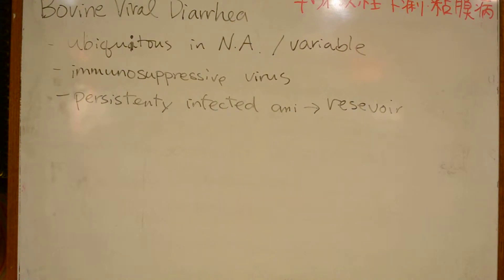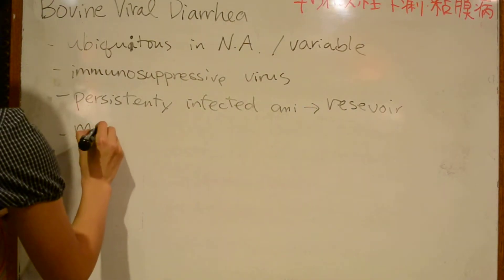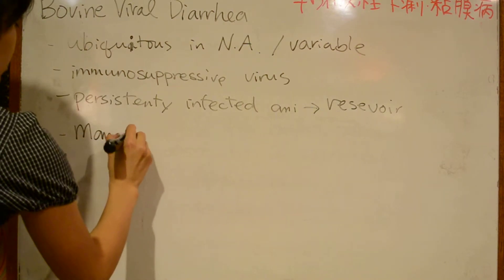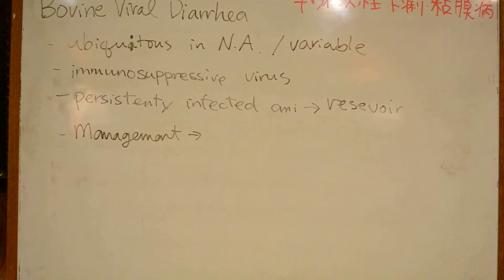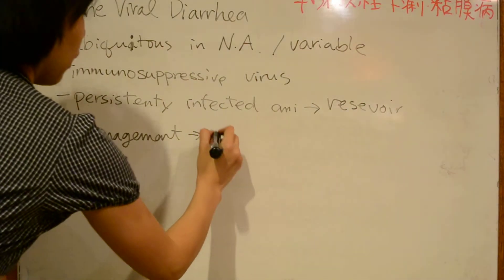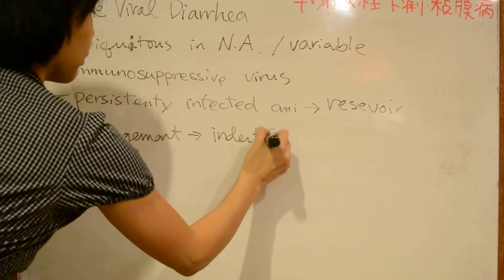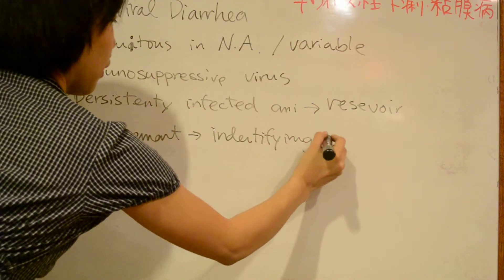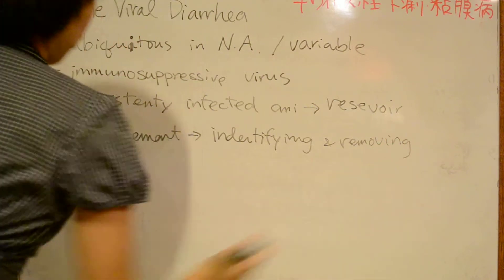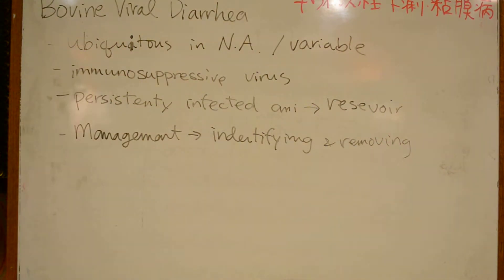BVDV appears to contribute significantly to Bovine Respiratory Disease Complex by inducing immunosuppression, which allows for the development of secondary bacterial pneumonia. Management strategies include identifying and removing persistently infected animals, as well as vaccination.